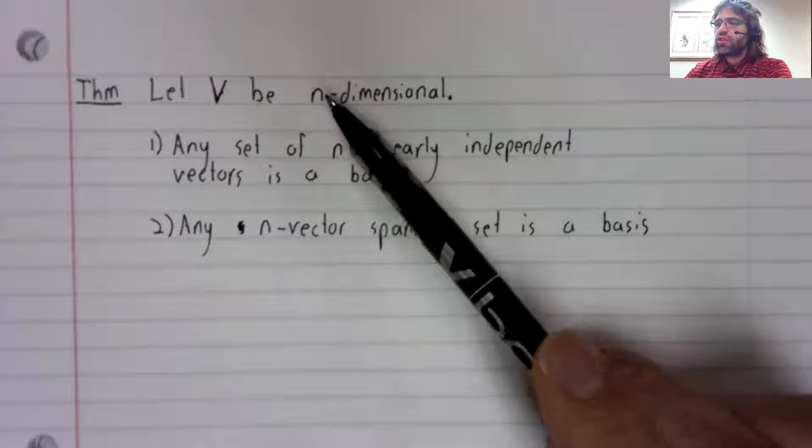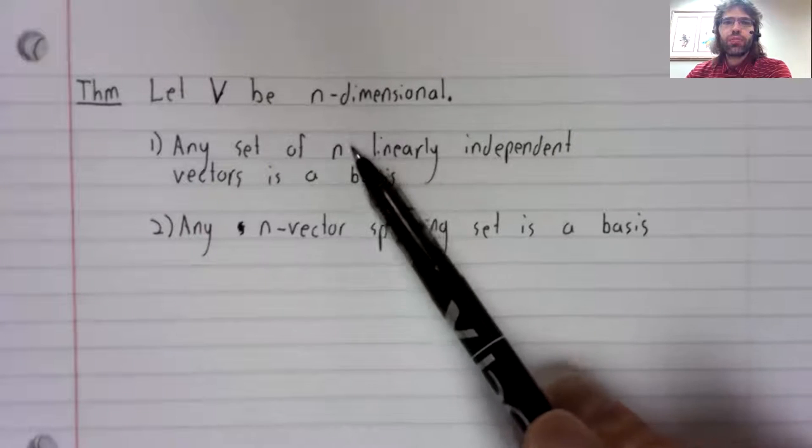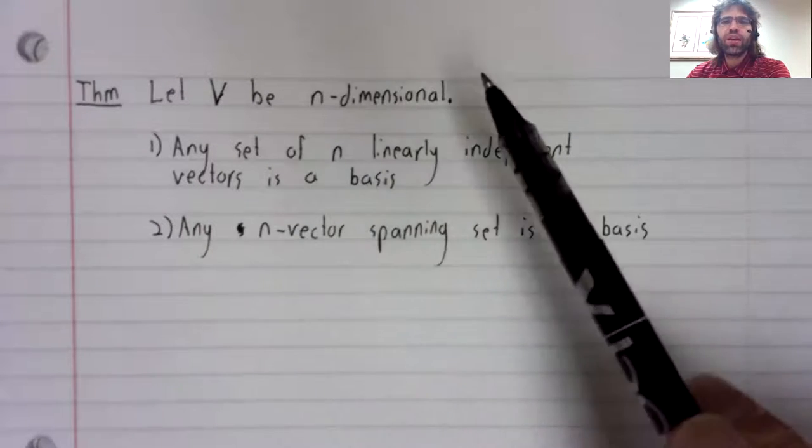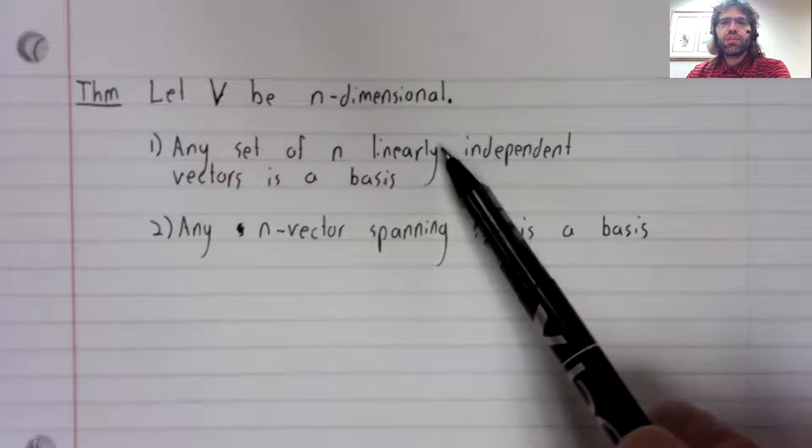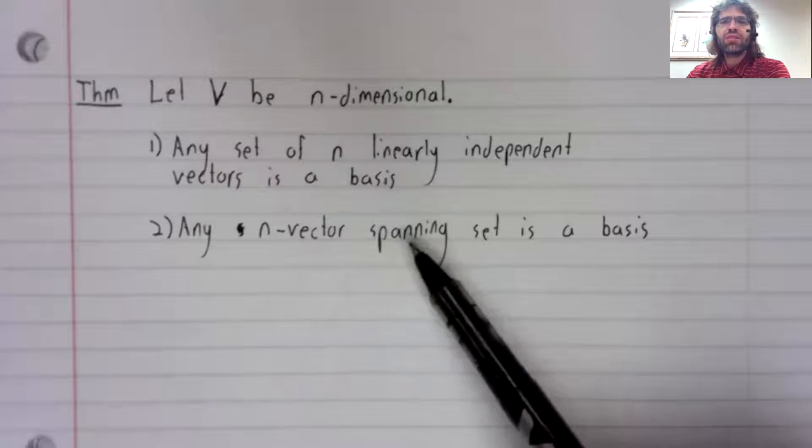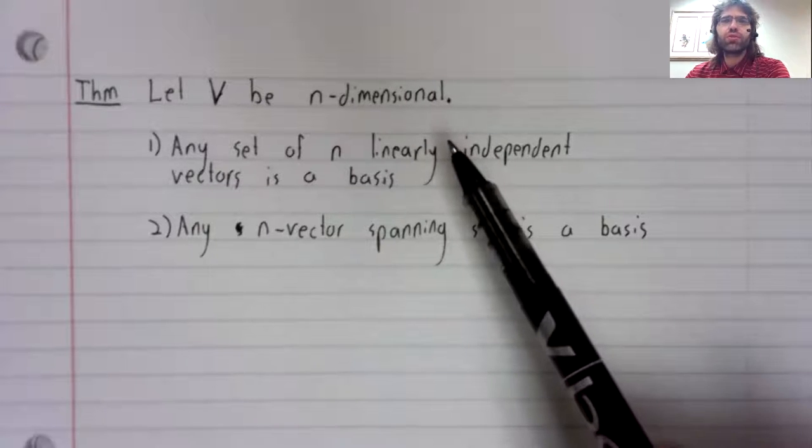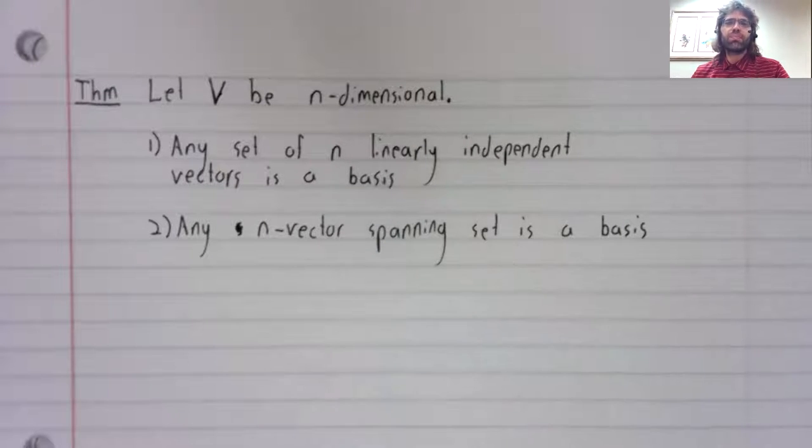In this situation, where you have the correct number of vectors, being linearly independent makes you a spanning set, and being a spanning set makes you linearly independent.